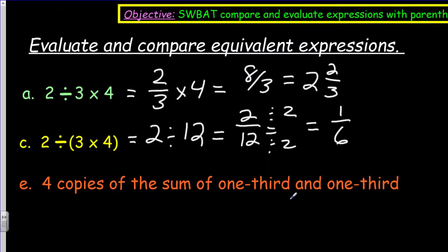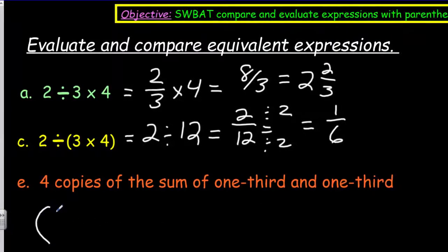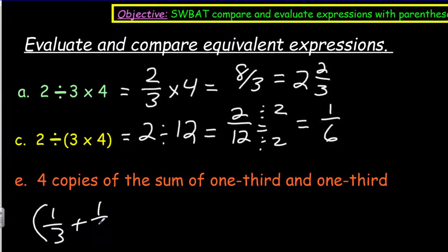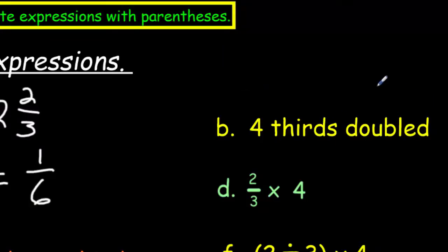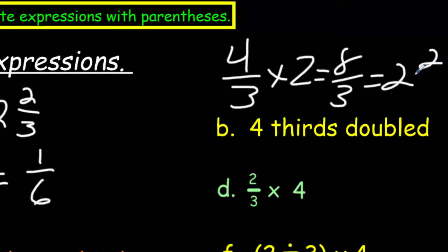So let's look at this one. Four copies of the sum of one-third and one-third. So if I did this, that sounds like we're doing one-third plus one-third, which is the sum of one-third and one-third, four copies times four. One-third and one-third is two-thirds, and two-thirds times four equals eight-thirds, which equals two and two-thirds. Four-thirds double, or that would be times two. Again, we get eight-thirds. Two-thirds times four, well, that's eight-thirds.